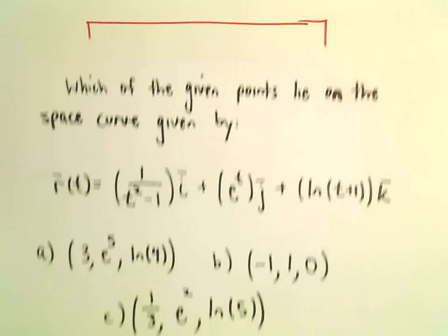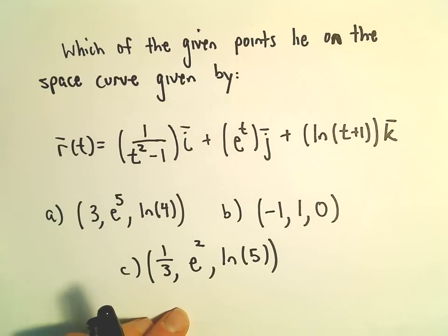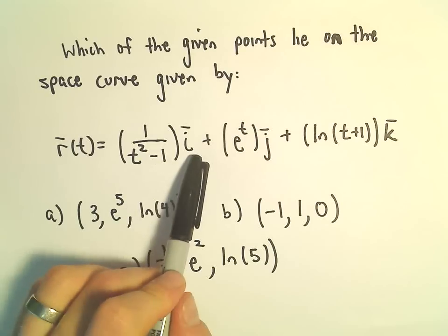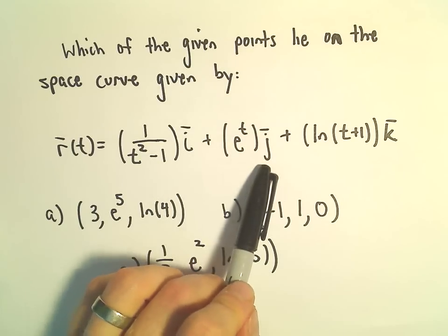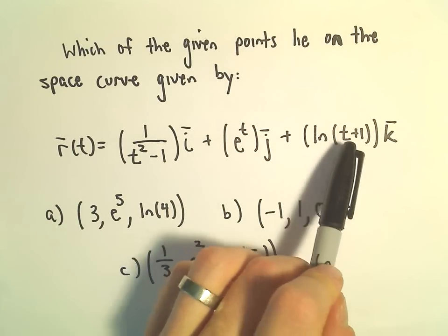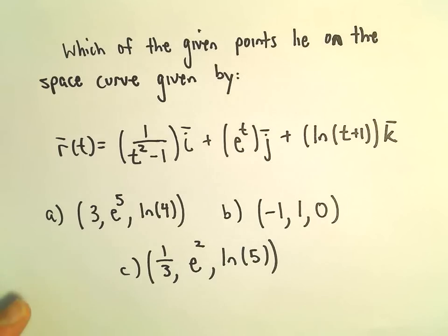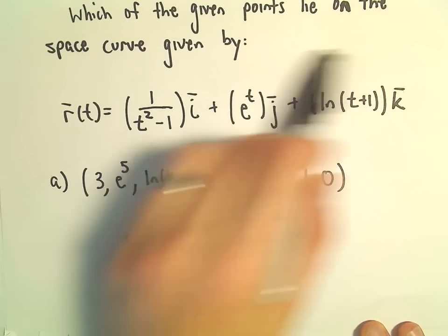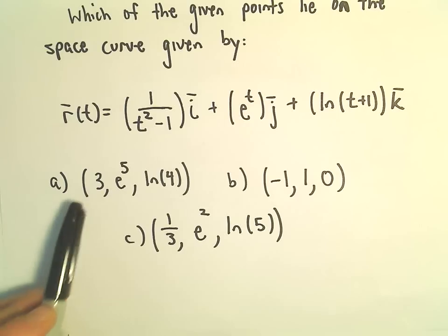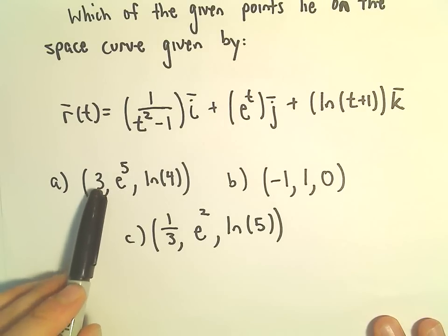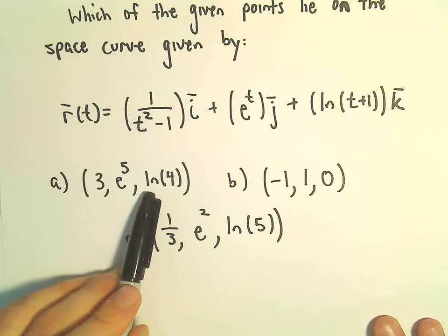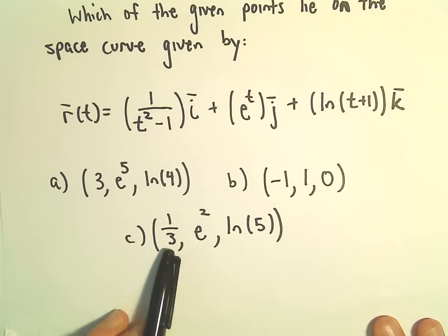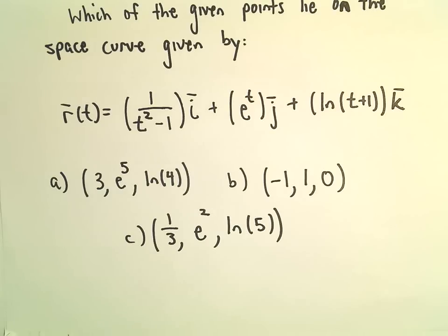Just another question related to vector functions. Suppose we've got the vector function r of t equals 1 over t squared minus 1 times i, plus e to the t times j, plus the natural logarithm of t plus 1 times k. We want to know which one of these three points lies on this curve. Option a says we have (3, e to the 5th, ln 4), b we have (-1, 1, 0), and c says we have (1/3, e squared, ln 5).